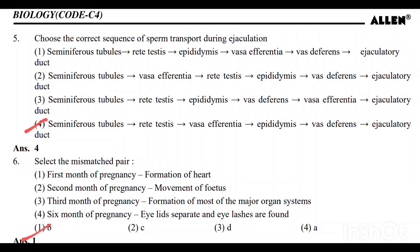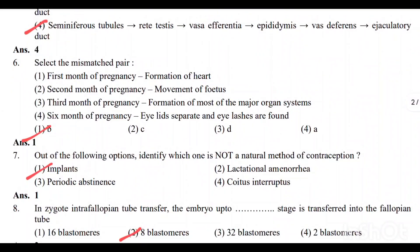Question number 5: Choose the correct sequence of sperm transfer during ejaculation. Option 4 is the correct answer: Seminiferous tubules → Rete testes → Vasa efferentia → Epididymis → Vas deferens → Ejaculatory duct.